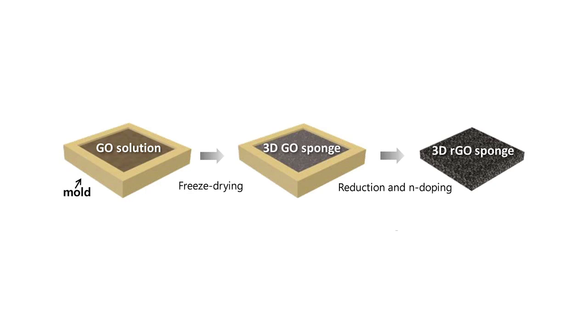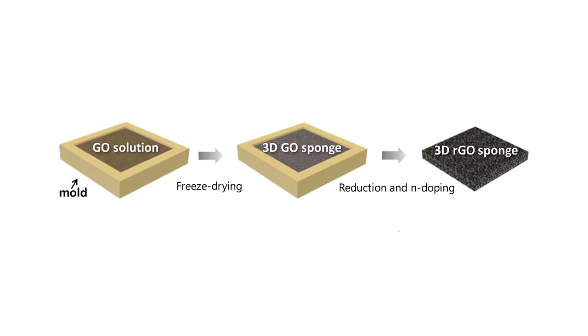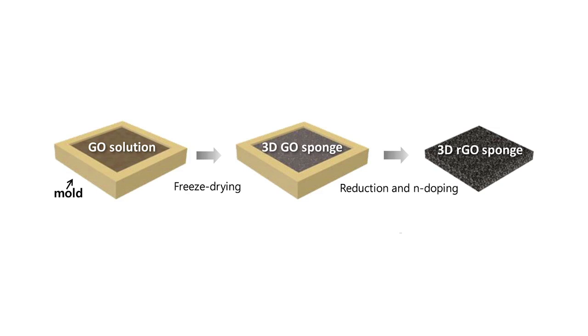The researchers developed a two-step process that creates an aerogel by first freeze-drying a solution of graphene oxide flakes. They then reduce the oxidized graphene to improve its electrical properties.